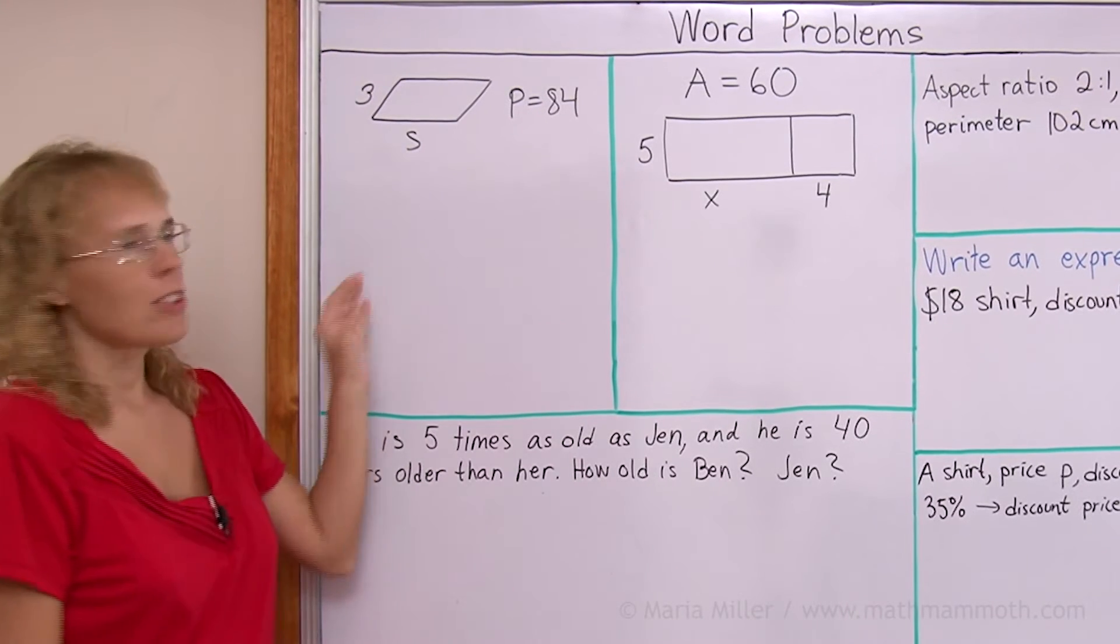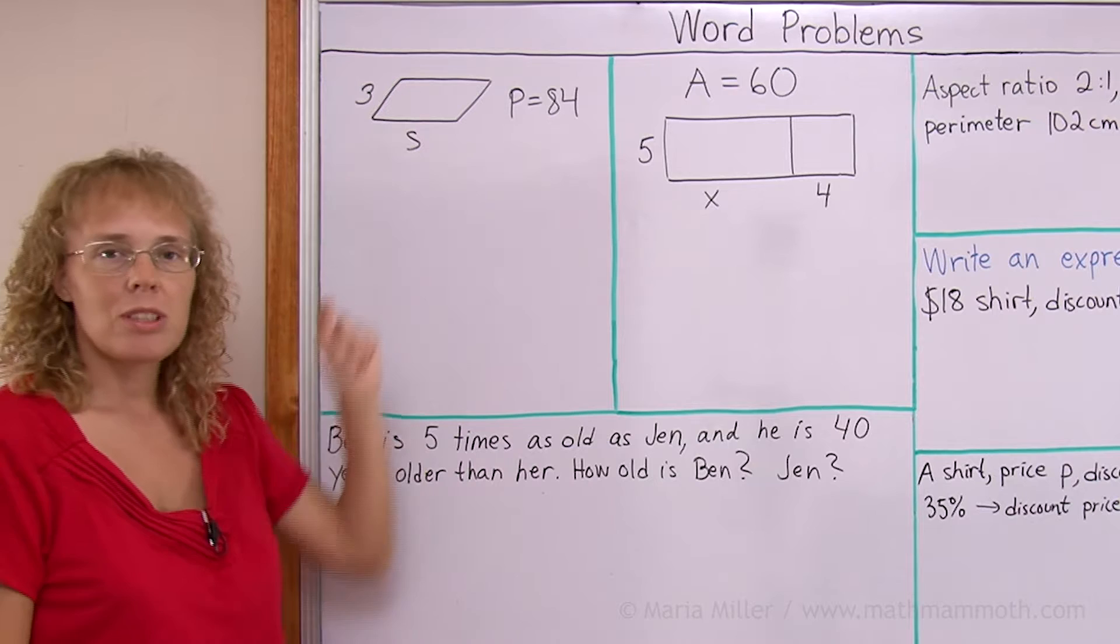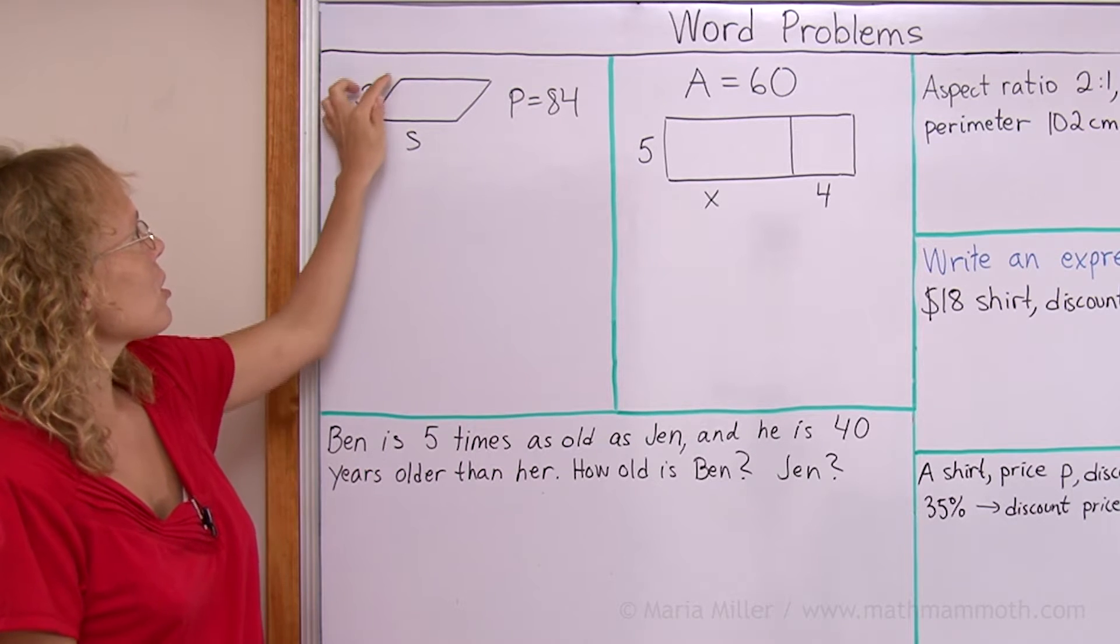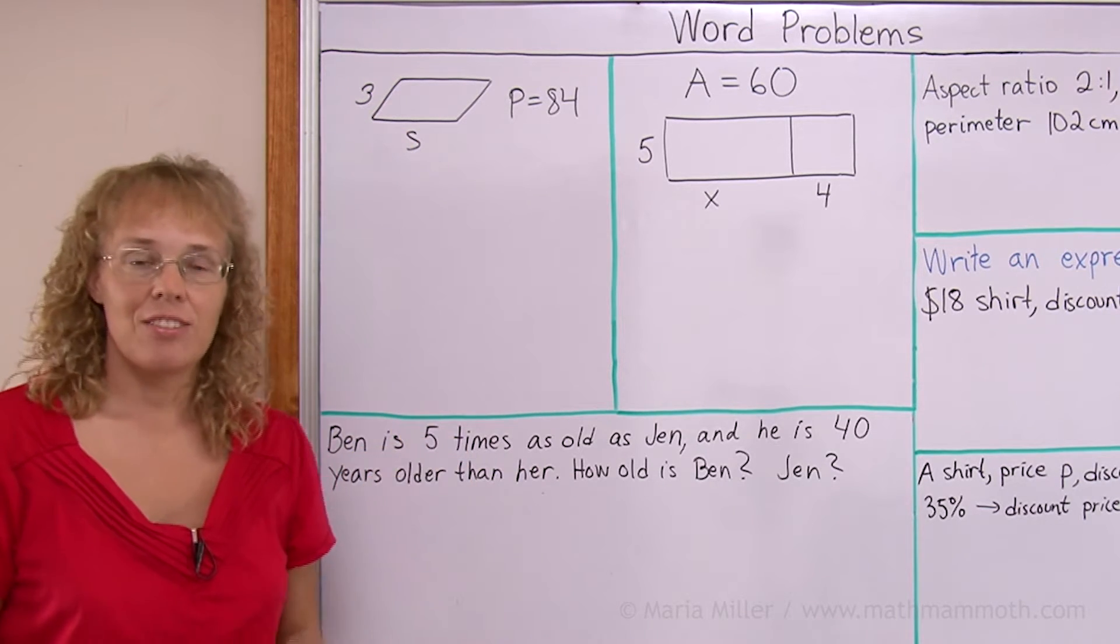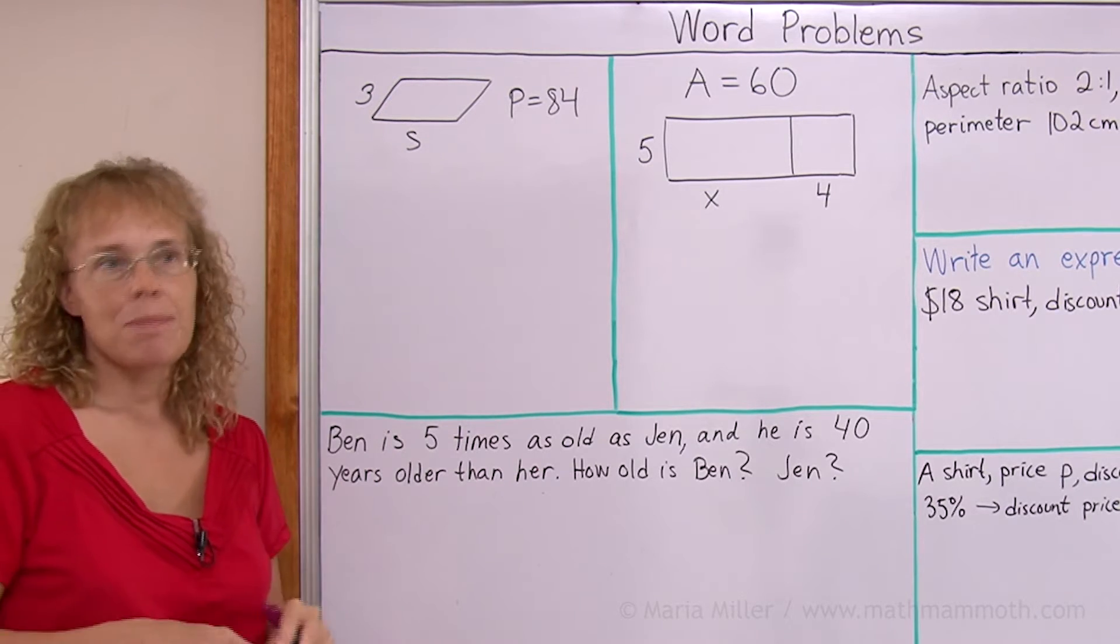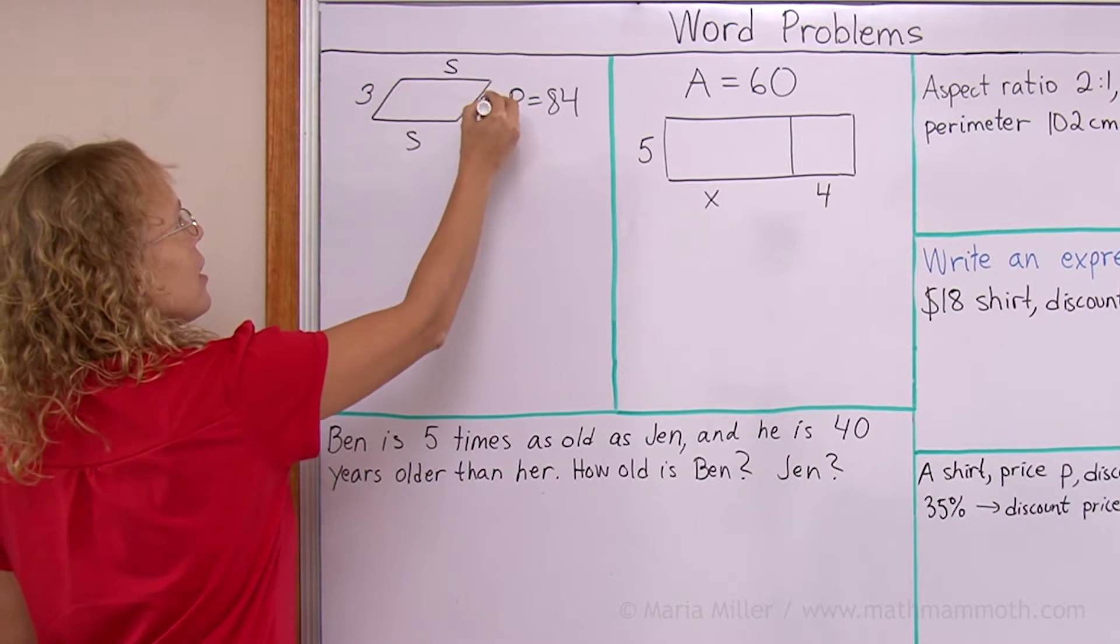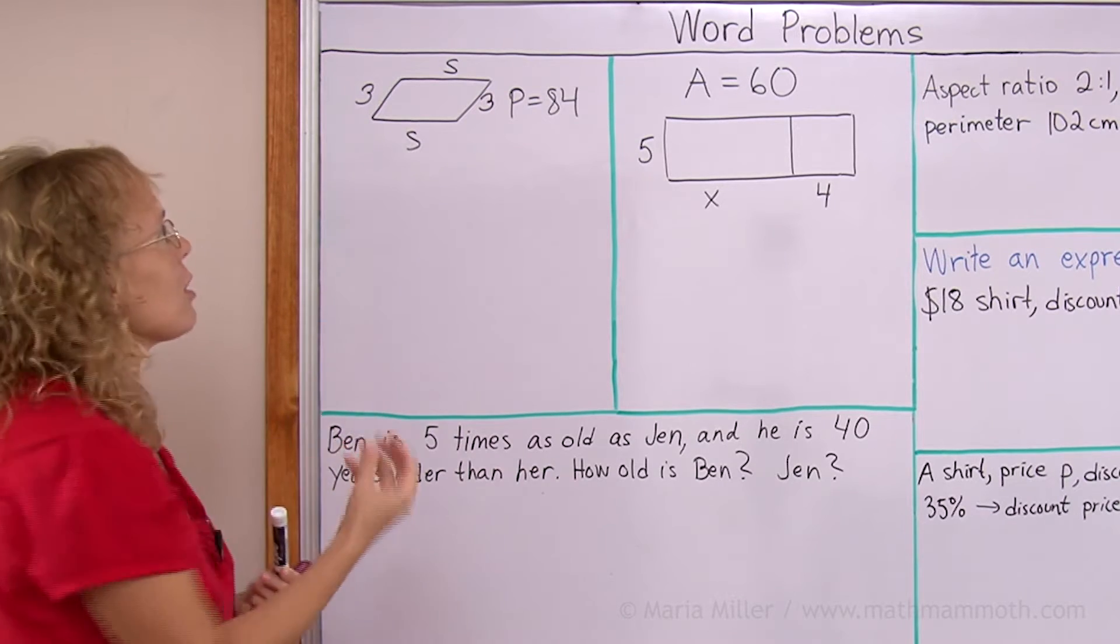This first problem involves a parallelogram and p means perimeter. Its perimeter is 84 units, such as 84 inches or 84 centimeters. This side measures three units. This side is given as s, a variable there, and that's what we need to find. How much is s? In a parallelogram, the opposite sides are congruent, so this side is s and this side is 3.